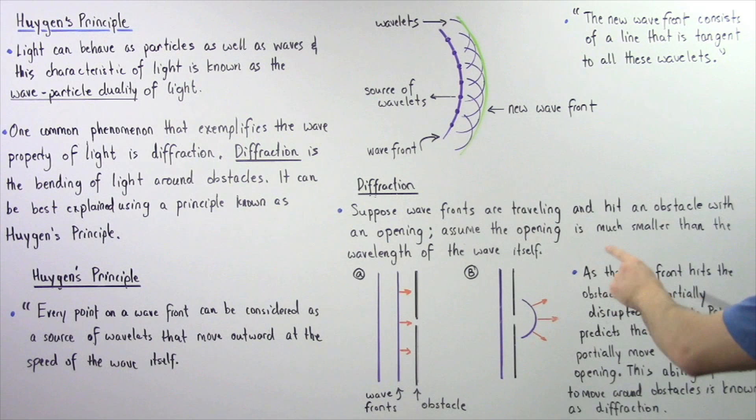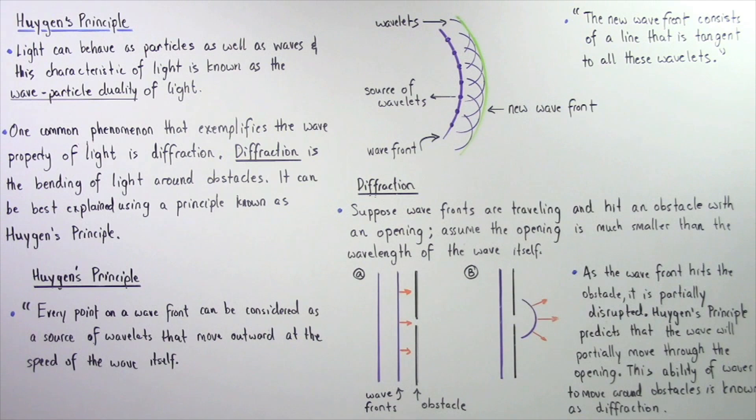We see that as the wave fronts hit the obstacle, it is partially disrupted. Huygens principle predicts that the wave will partially move through the opening as shown in the following diagram, and this ability of waves to move around obstacles is known as diffraction of light.